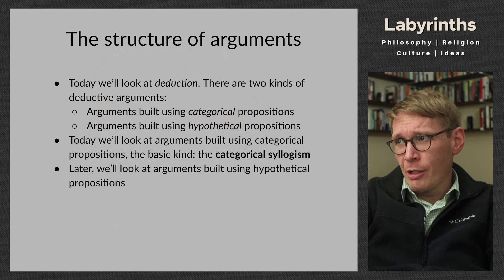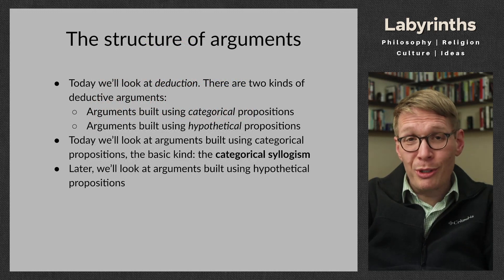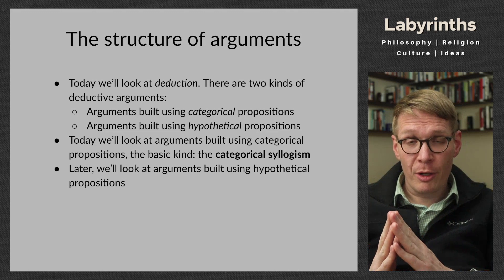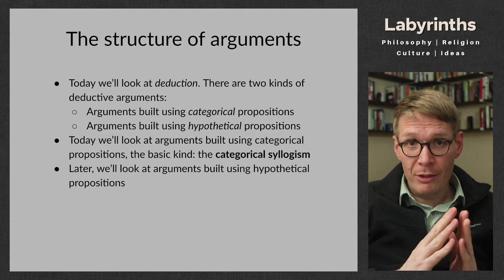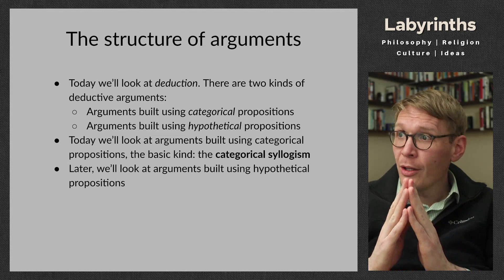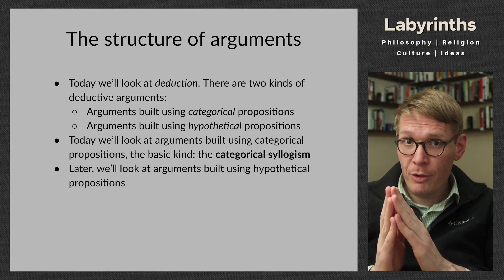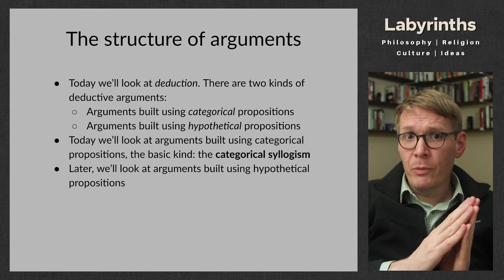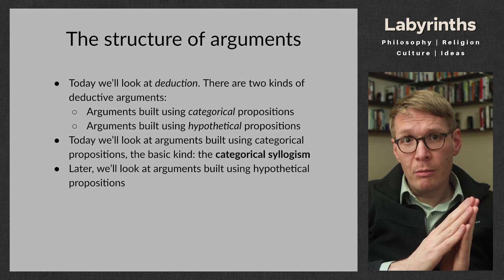There are two kinds of deductive arguments — so here we're using the division of terms again. We're first distinguishing between deductive arguments and inductive arguments, and we're looking only at deductive. Within deductive arguments, there are arguments built with categorical propositions — that's A, I, E, O, the four kinds we've looked at in earlier lectures — and arguments built with hypothetical propositions. They're if-then propositions, or propositions that join multiple categorical propositions with either 'and' or 'or.'